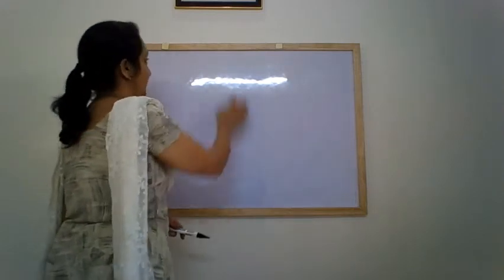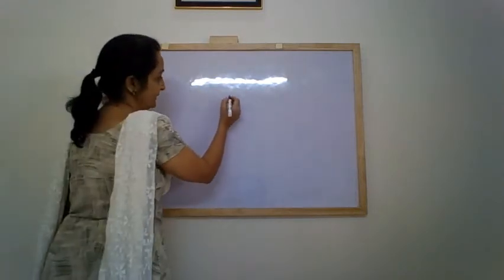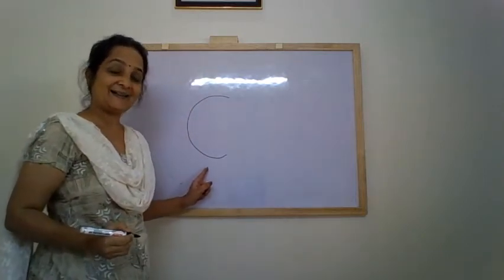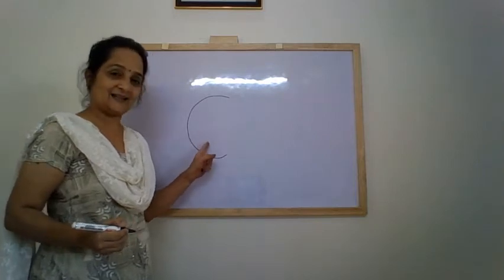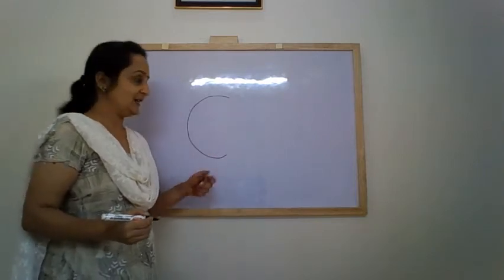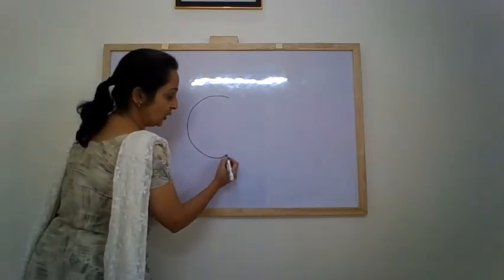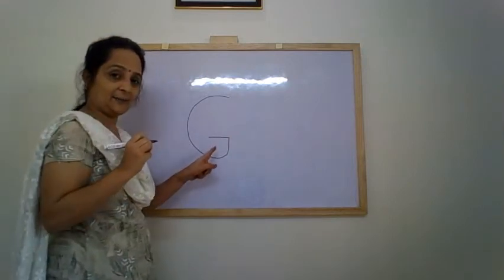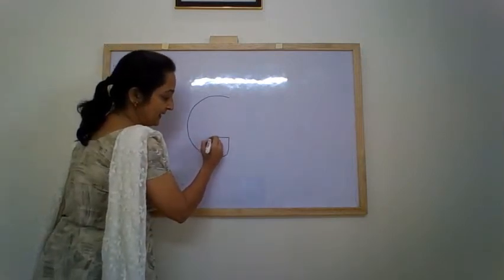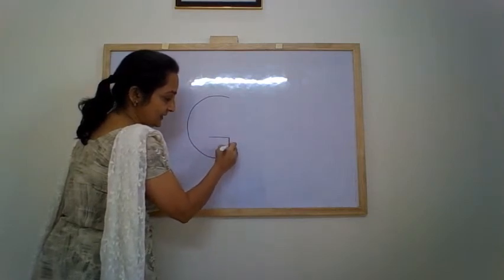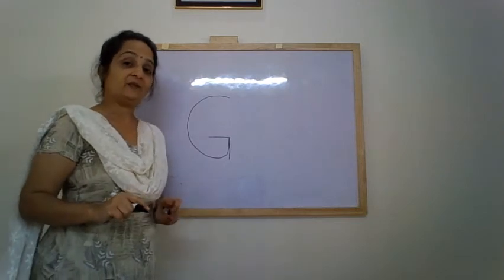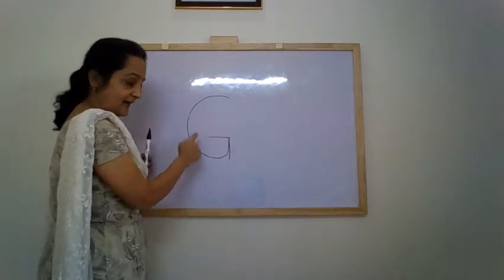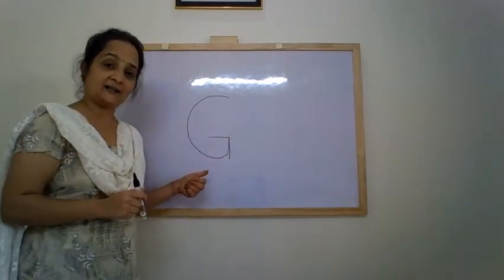We will begin with a backward curve. Which letter does this resemble? Letter C. That's right, this letter resembles letter C. So we first make a C, then we go up, go inside and make a sleeping line. On the same sleeping line we come up and make a standing line. So children, we use three patterns: a backward curve, a sleeping line, and a standing line to write the letter G.